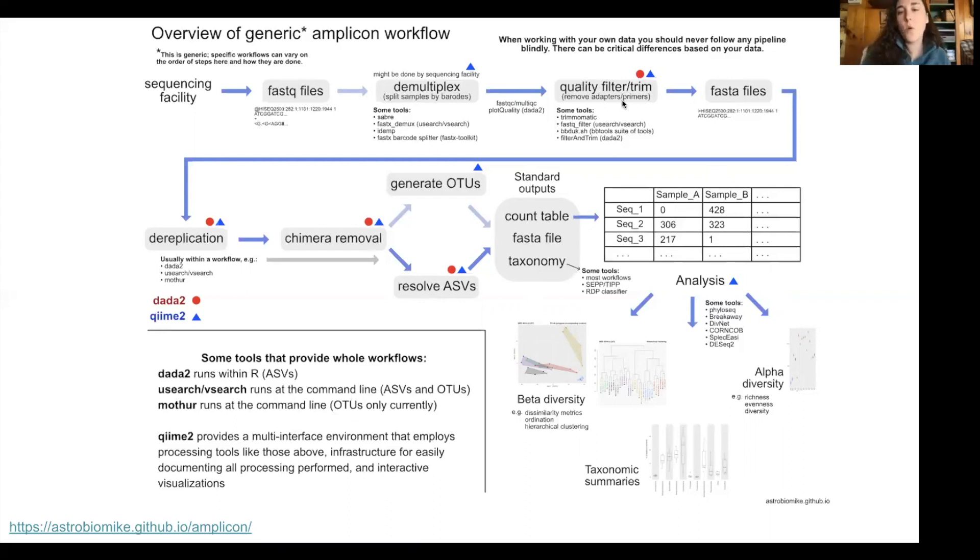Then there's a quality filtering step where you want to make sure you're trimming off those barcodes. You want to do a few other quality control steps in order to make sure you're only keeping high-quality sequences, removing chimeras and things like that. And then you end up with FASTA files, so these are your raw sequences that you'll be working with, followed by a dereplication step. So in this step, you essentially are taking just the unique sequences because you don't want to run every single sequence through a database and figure out what their identity is if you have multiple copies of the same sequence. So we just take out those unique sequences.